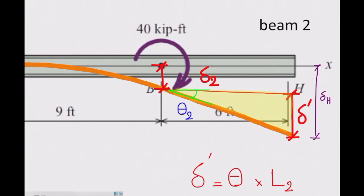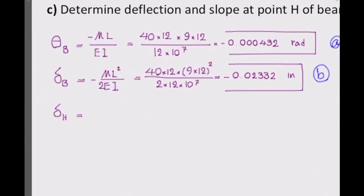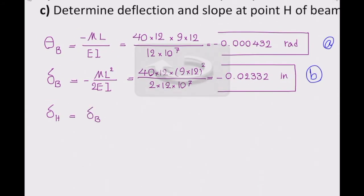Delta H will be delta prime plus delta 2. Delta prime is theta times L2. I can say delta H is delta B plus L2 times sine of theta at that point, or tangent of theta at that point, or theta at that point. As I said, they are all equal to each other.